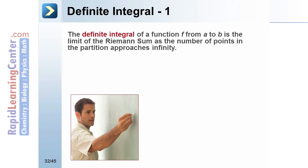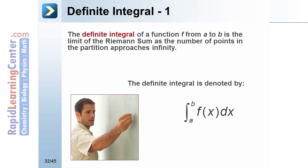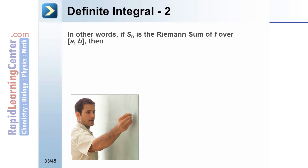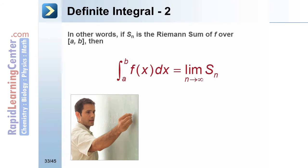The definite integral of a function f from a to b is the limit of the Riemann sum as the number of points in the partition approaches infinity. In other words, if S sub n is the Riemann sum of f over [a,b], then the integral from a to b of f of x is equal to the limit as n approaches infinity of S sub n.